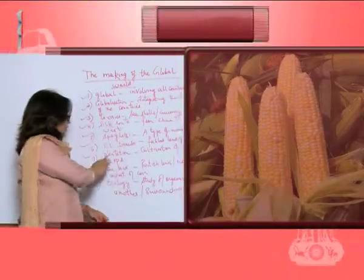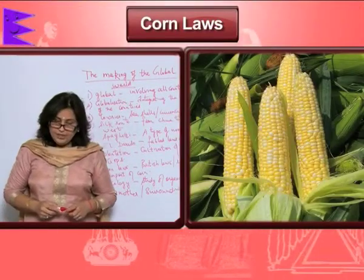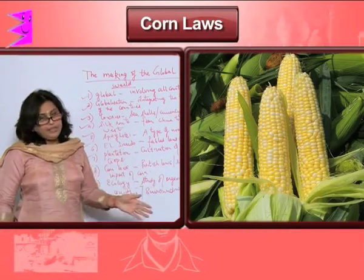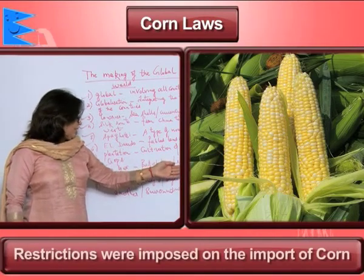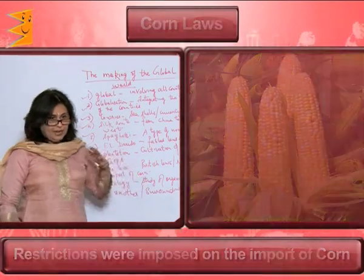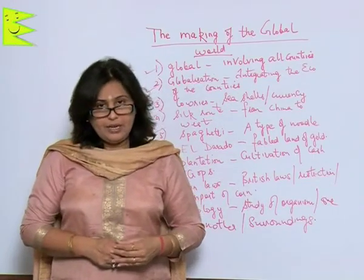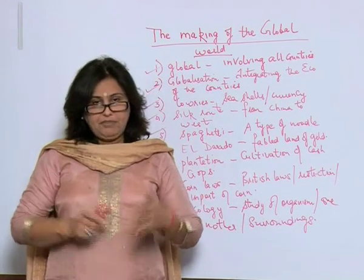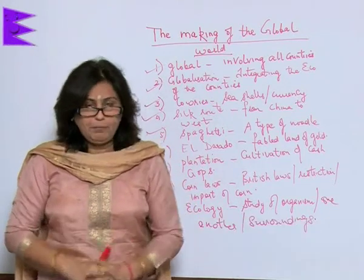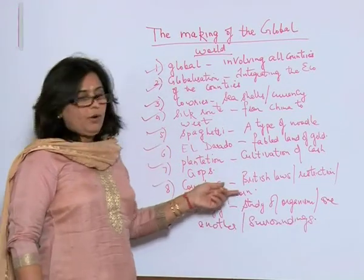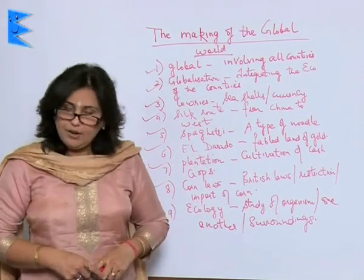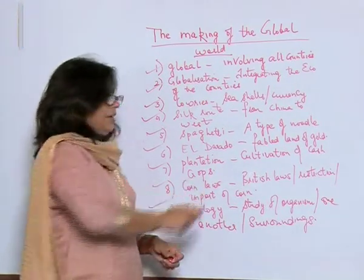Next is 'Corn Laws.' These were the laws imposed in Britain during this period — that is, restrictions were placed on the import of corn. In the chapter, we will look at why these restrictions were imposed, what effects were felt because of the import of corn, who wanted the Corn Laws imposed, and how they were eventually abolished.